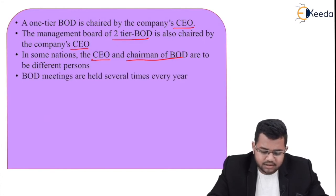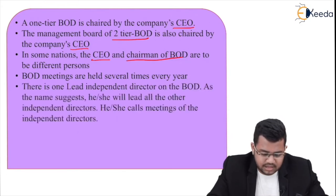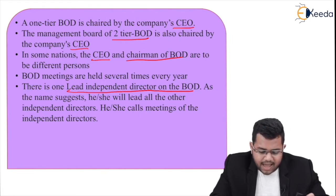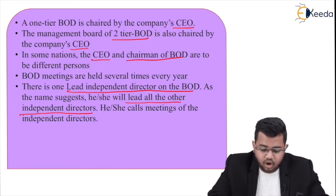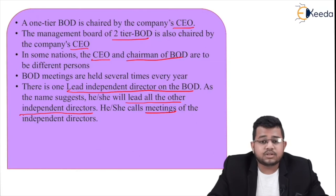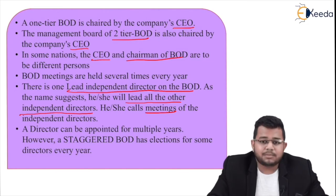BOD meetings are held several times every year — normally three to four times a year, and even in India, typically four times a year. There is one lead independent director on the board of directors who, as the name suggests, leads all the other independent directors and can call meetings of the independent directors.